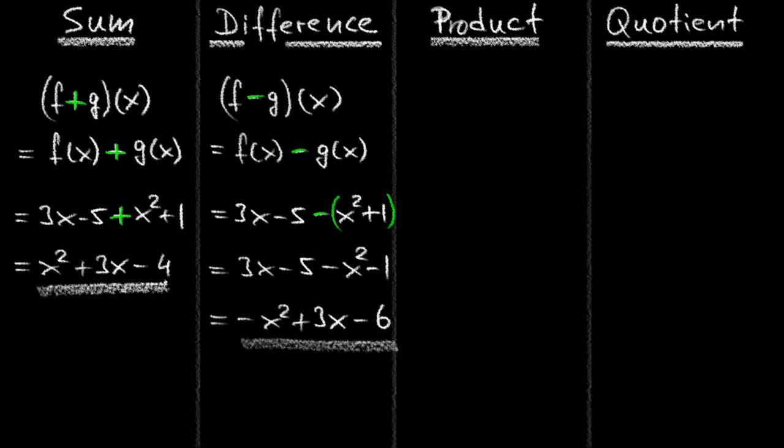By the way, if you are not a beginner and confident with negative signs in front of parentheses, you can just write negative x squared plus 3x minus 6 directly.